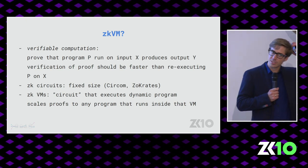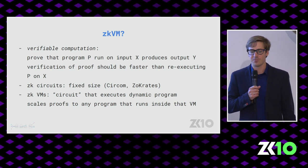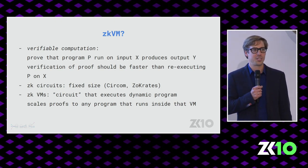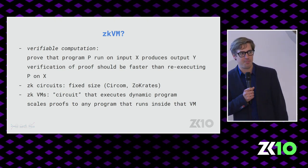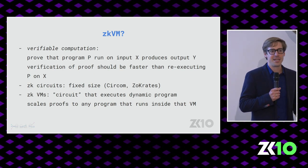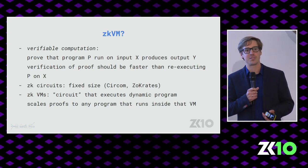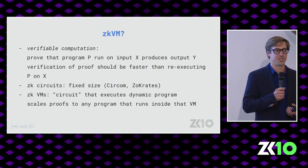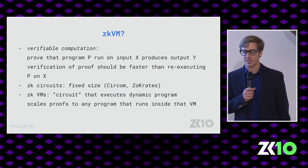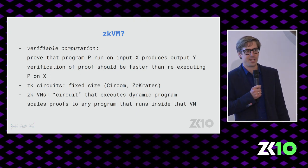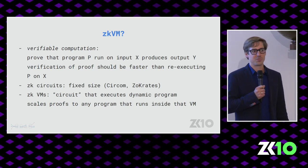There are two distinctions: ZK circuits and ZK VMs. ZK circuits are fixed size — the computation you can do is fixed. In contrast, a ZK VM executes a dynamic program, so a program that has a program counter, jumps, branches, memory, and so on — everything you would expect from a virtual machine. With a ZK VM, you can generate proofs for any program.